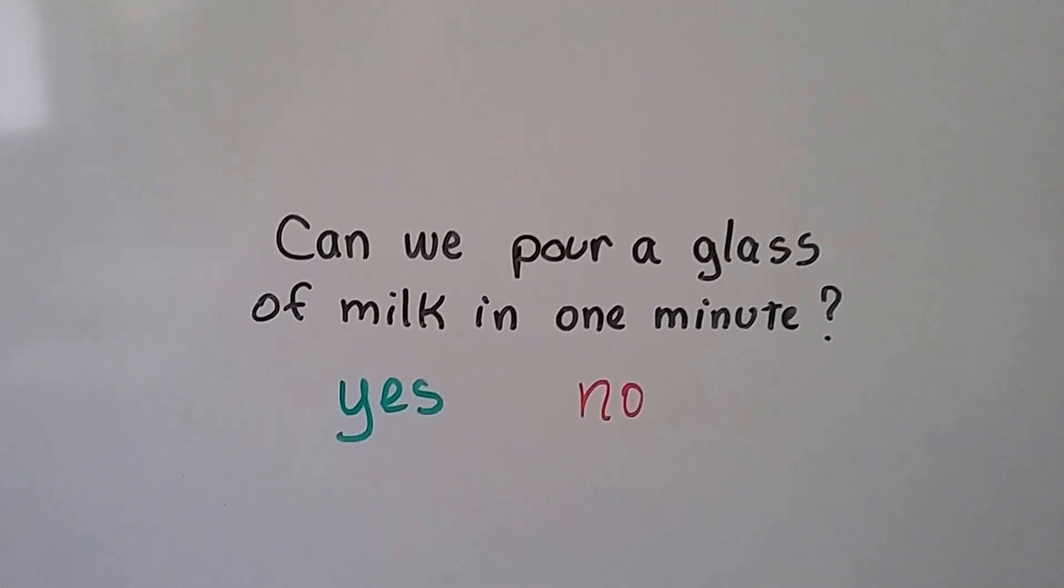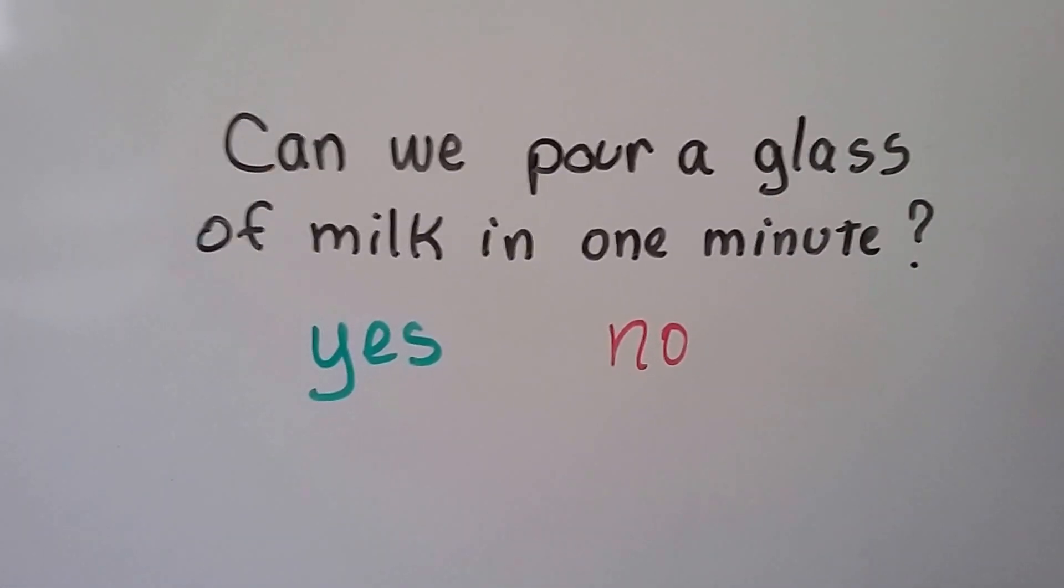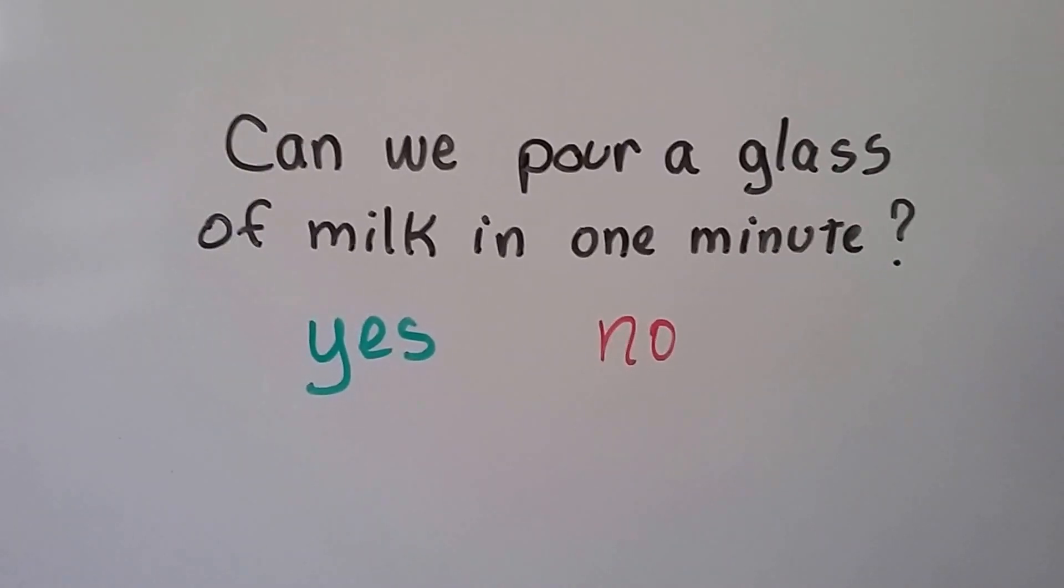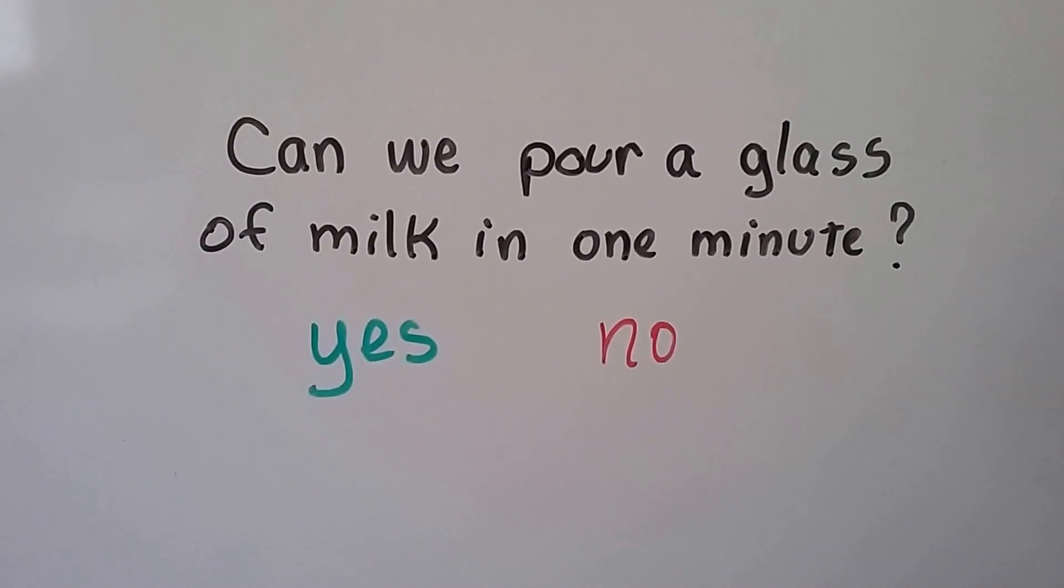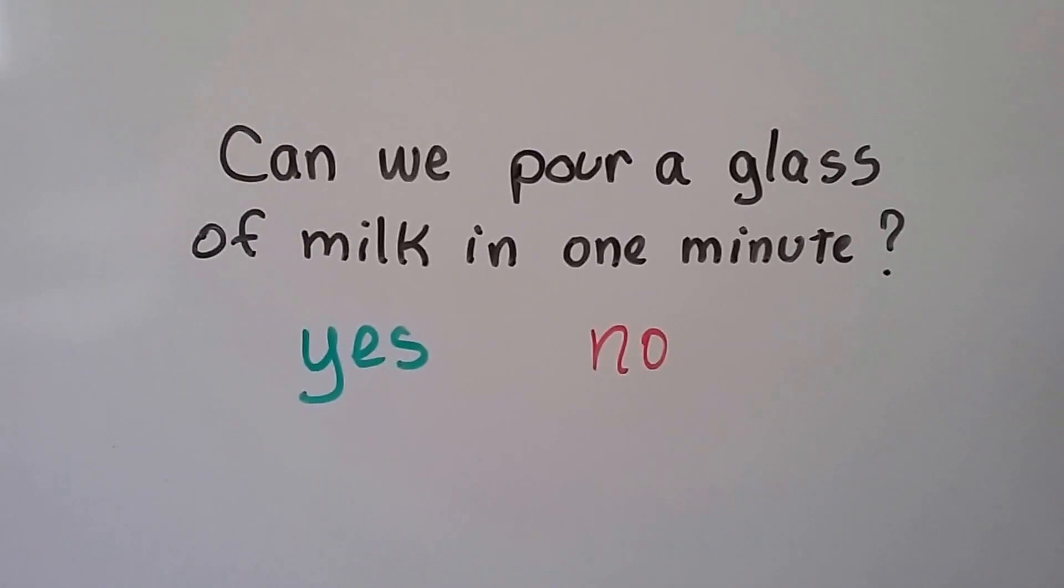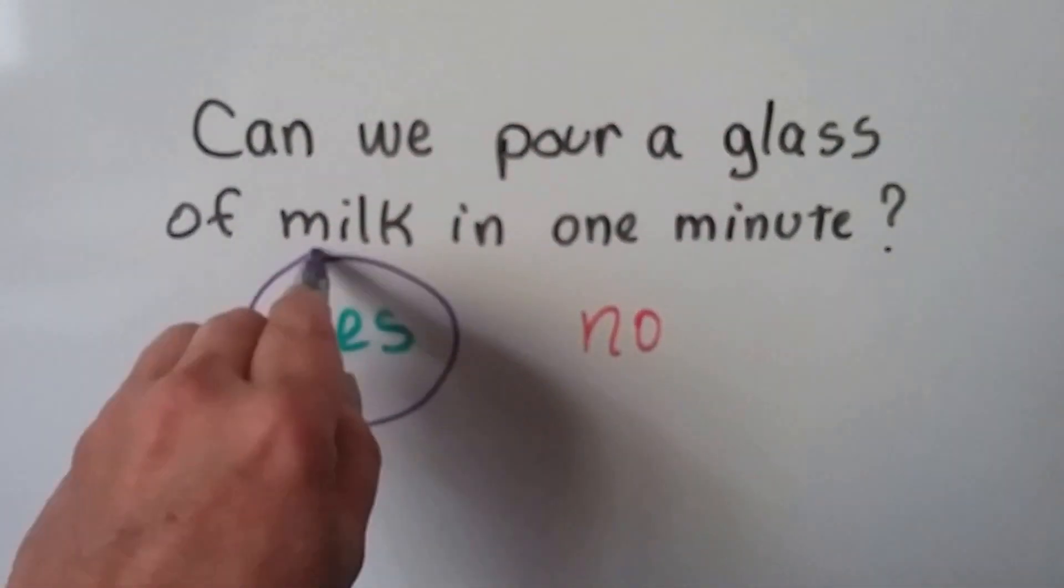Could you pour a glass of milk in one minute? In the time that you can count to 60, can you open the refrigerator, get the milk out, take the cap off, pour it into a glass, and put the milk back? There's a very good chance you could. You could do that in about a minute. It doesn't take very long to pour a glass of milk.